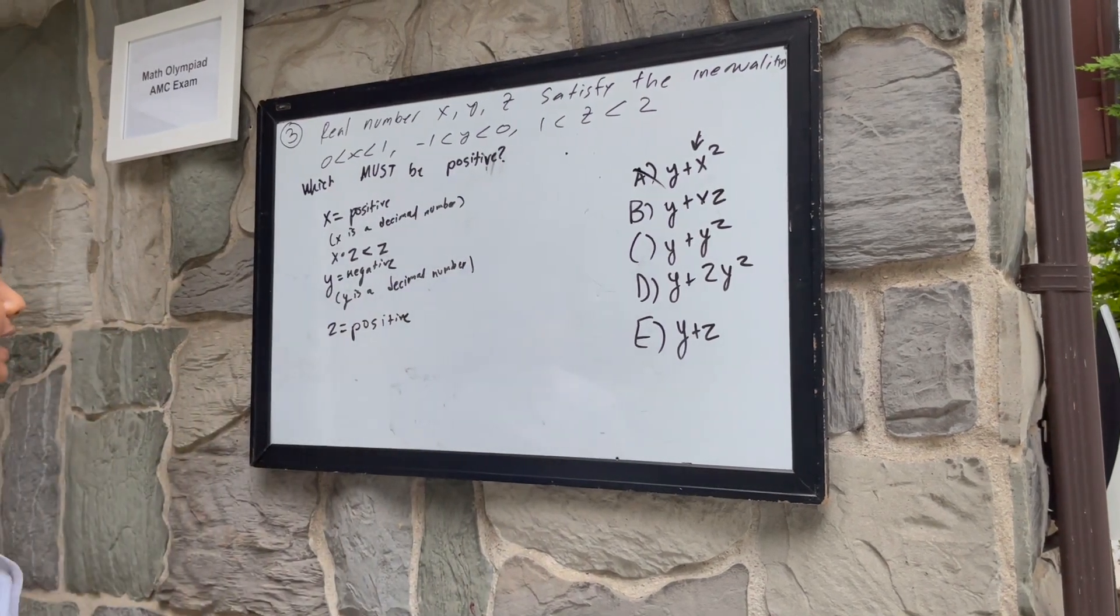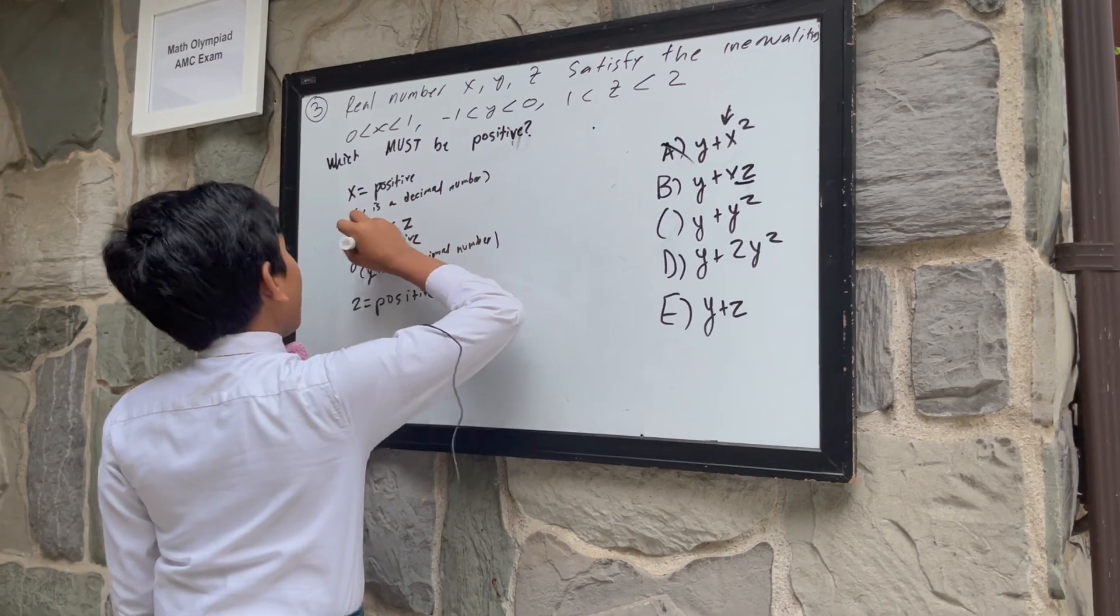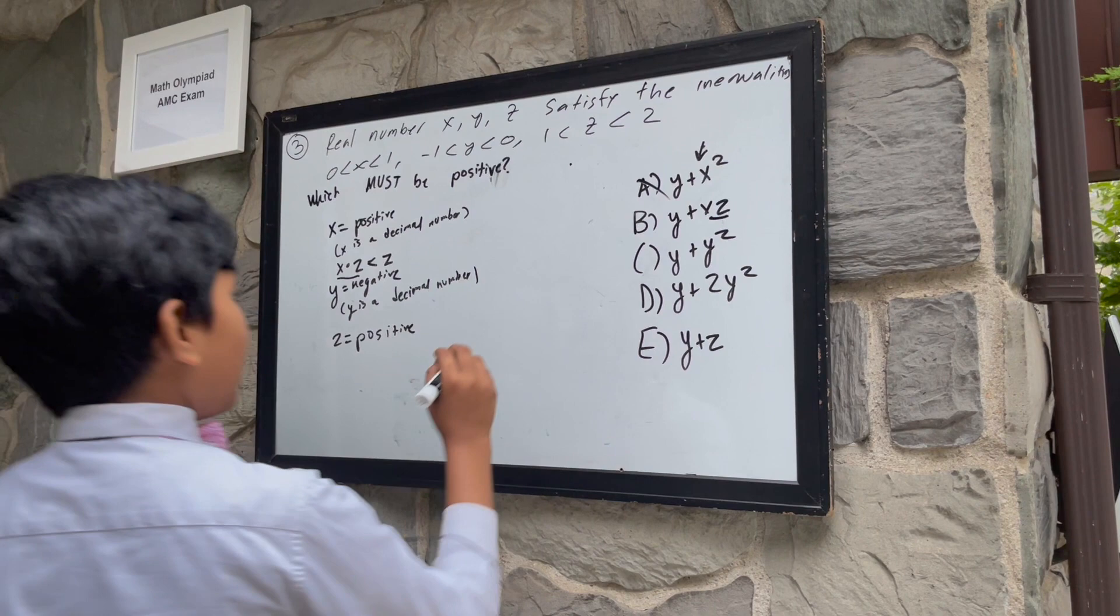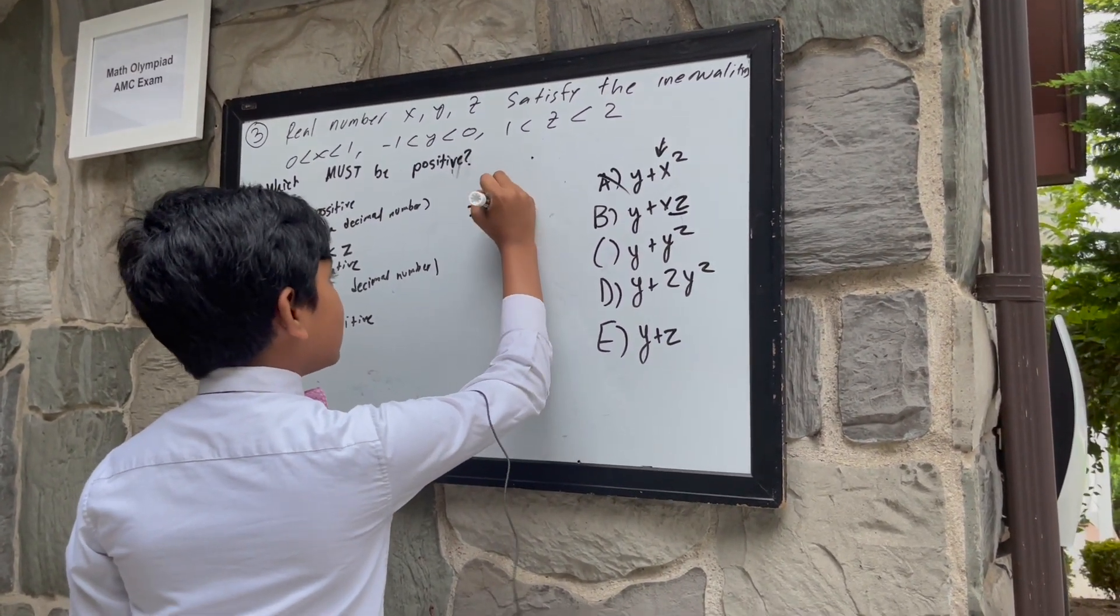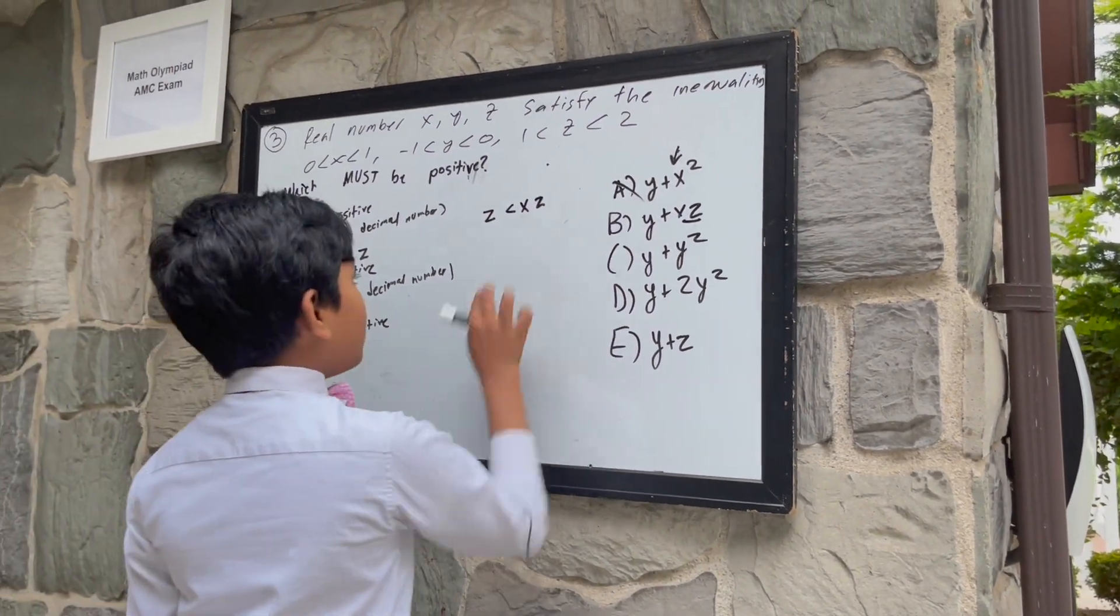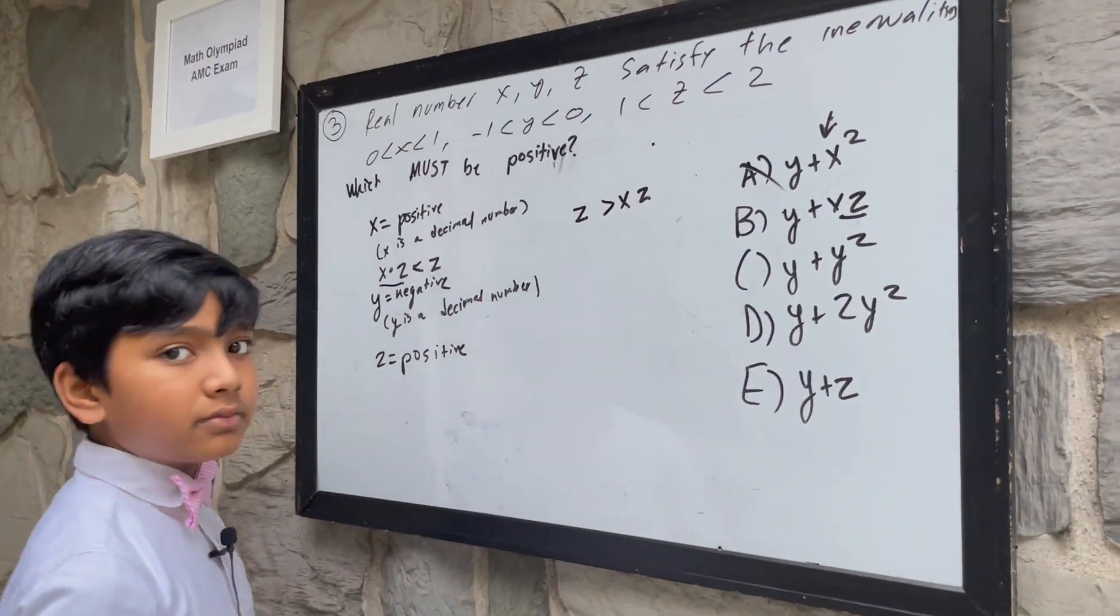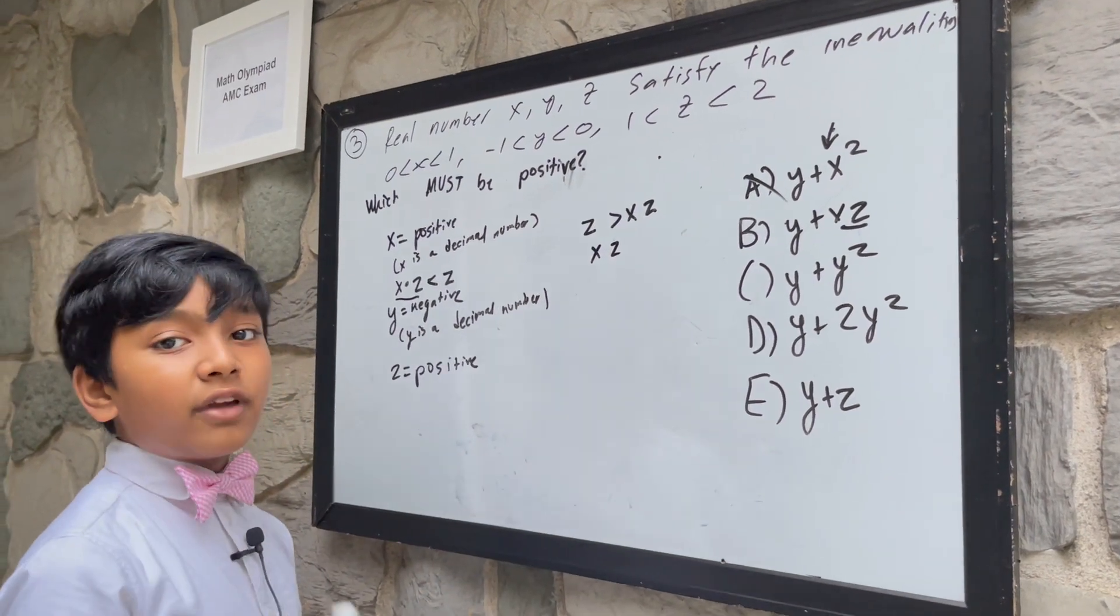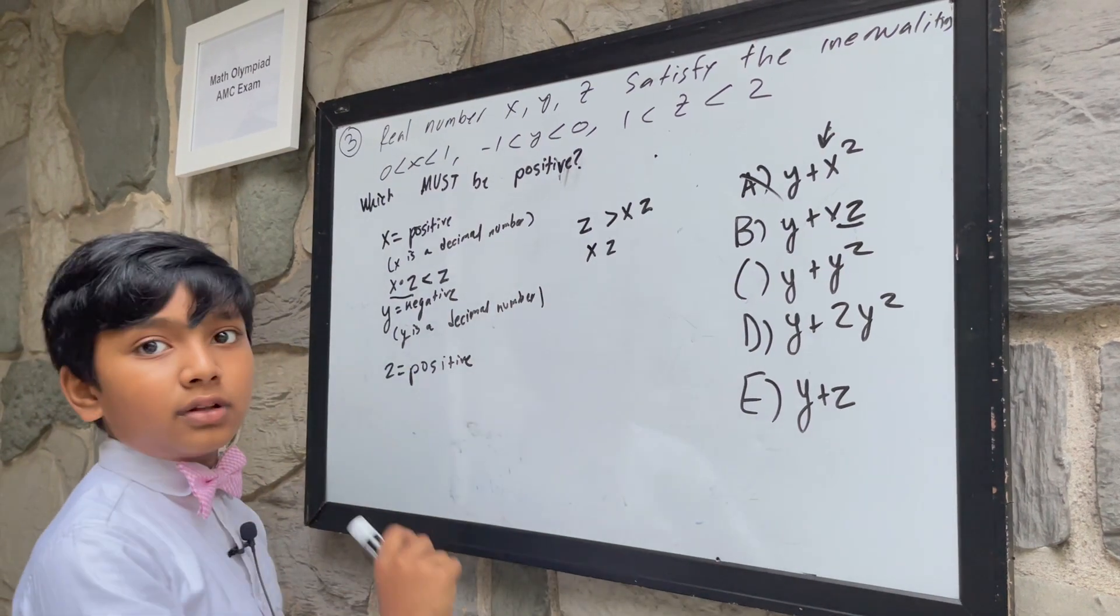What about y plus xz? Well, as we've stated before, x times z is less than z, because x is less than 1. So that means that, since z is less than xz, z is always greater than y, but z is greater than xz. So xz does not have to be greater than y. If x is a very low value, then that means that y could be greater than xz. So it's not necessarily greater than y.